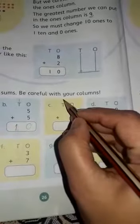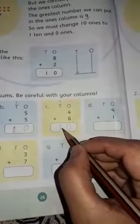We will write 0 in ones column and 1 in tens column. So this value is 10. Parts D, E, F, G and H we will solve.